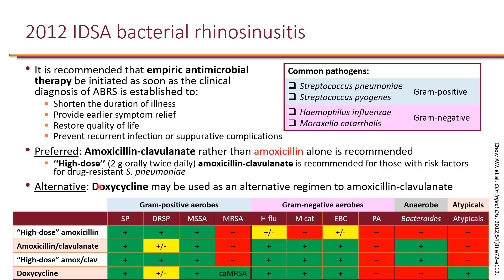If for some reason someone could not tolerate amoxicillin-clavulanate, we can consider doxycycline as an alternative. Doxycycline does not have the best activity against drug-resistant Strep pneumo; however, it is considered an alternative because it does have good activity against H. flu and Moraxella catarrhalis.